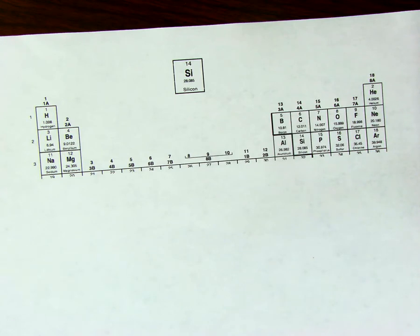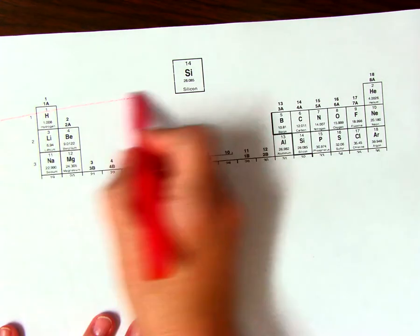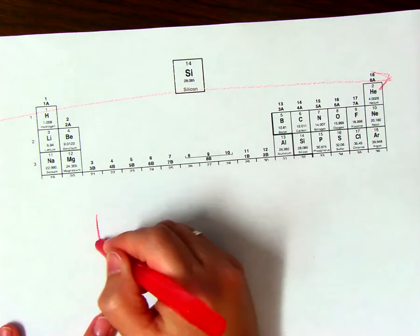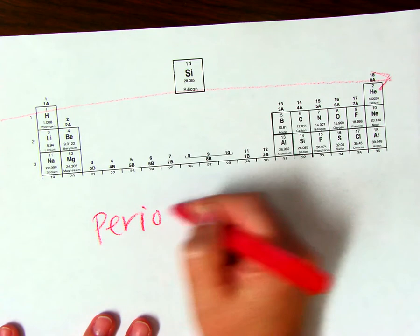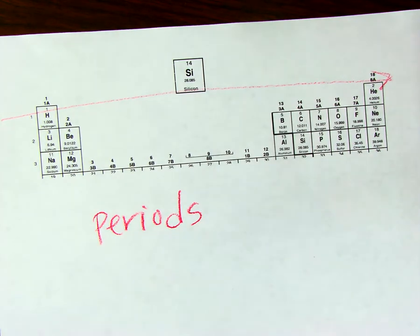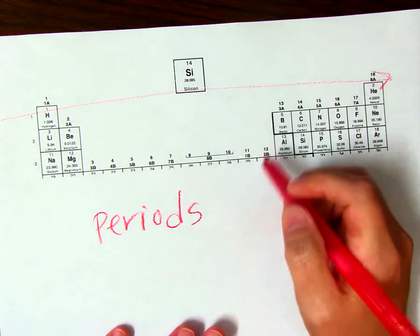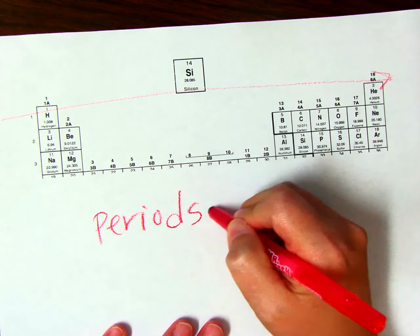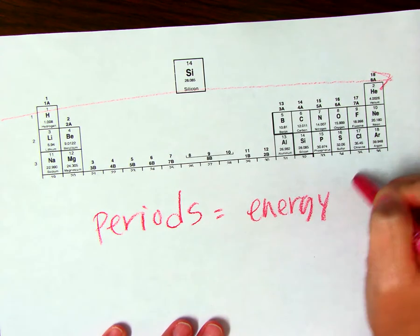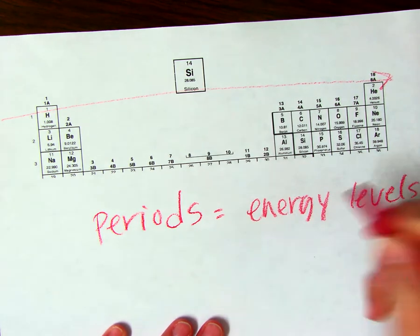So, I want to talk about periods, or the rows. We call these periods. And this tells us how many energy levels there are, or shells.